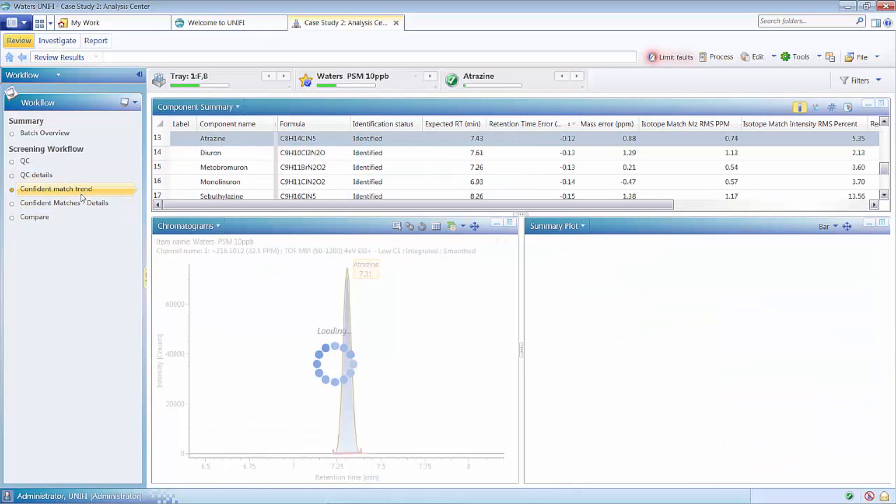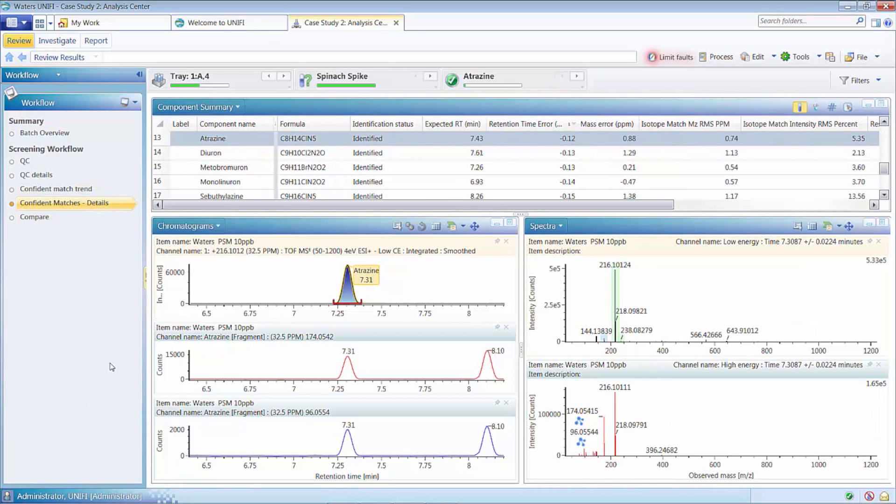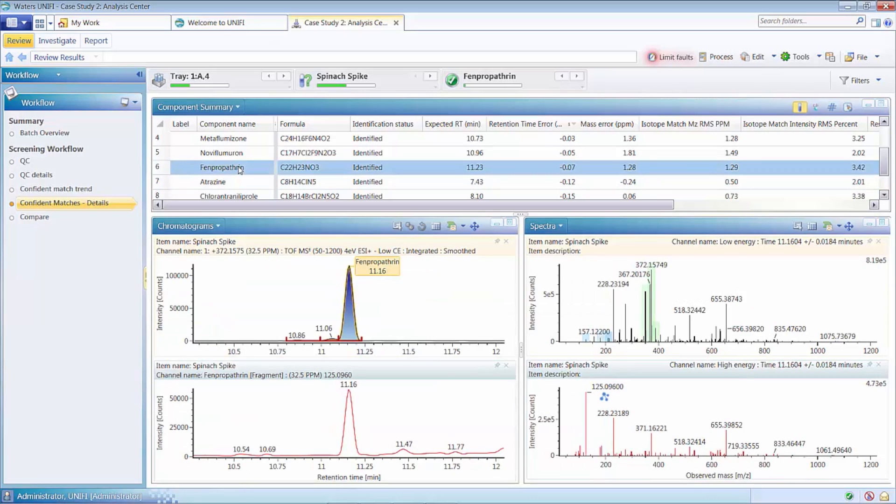Raw data is only processed once, after which the componentized data is rapidly interrogated via the application of filters, which are combined into a customizable workflow.